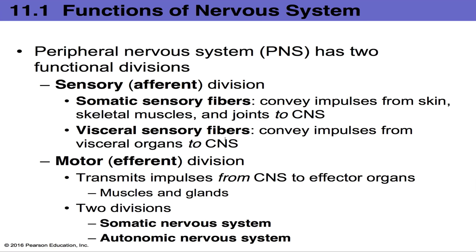For visceral sensory fibers, we cannot consciously detect what these organs are doing. You can't feel your pancreas secreting enzymes, your liver functioning, or your stomach breaking down food. This is a good thing — if we were conscious of all that, we'd be overloaded with sensory input. The exception is pain: we can detect pain when something is wrong with a visceral organ.